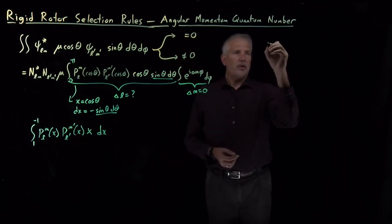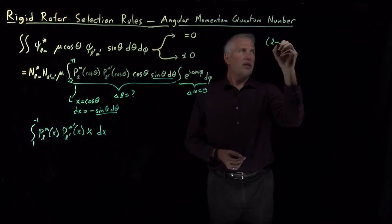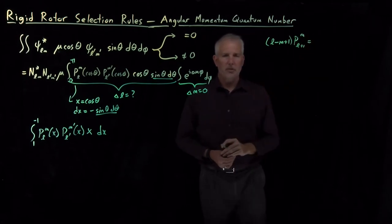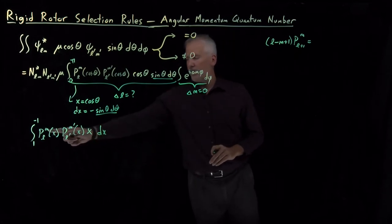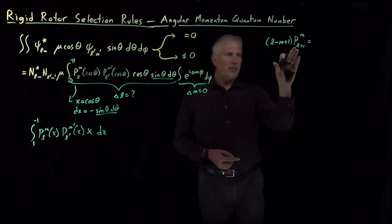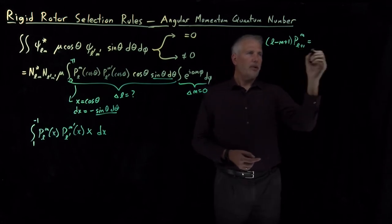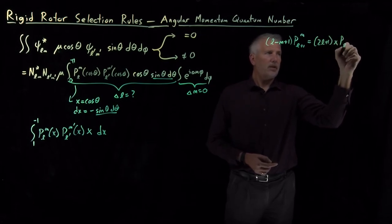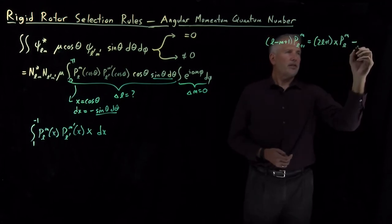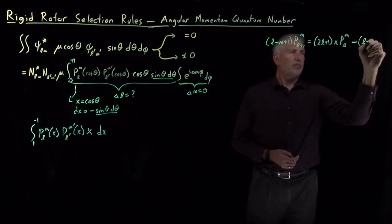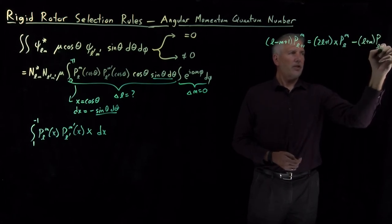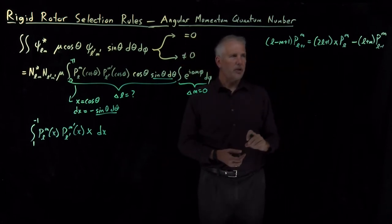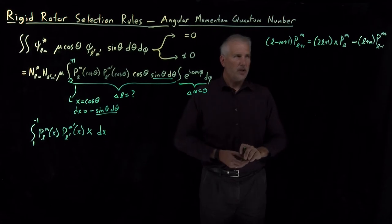I'll write down for you now what that recurrence relation looks like for the associated Legendre polynomials, the ones where M is allowed to be non-zero. What that tells us is the L plus 1 Legendre polynomial can be written in terms of X times the LM polynomial minus L plus M times the L minus 1 Legendre polynomial. That's similar to, but not exactly the same as the recurrence relation we've seen previously for the Legendre polynomials with M equals 0.